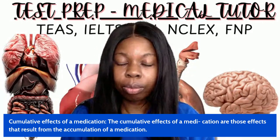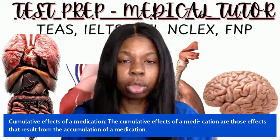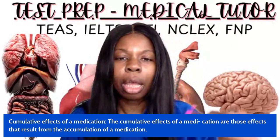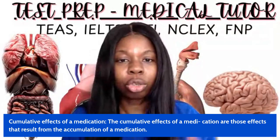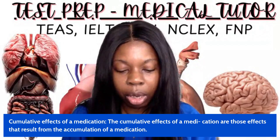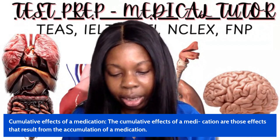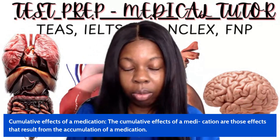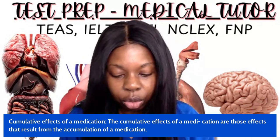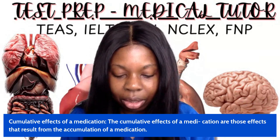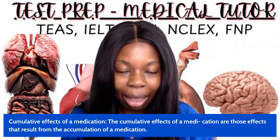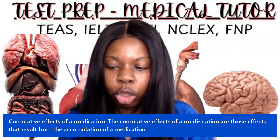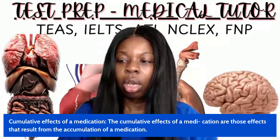I'm going to be reading from one of my books called the Pharmacology Cheat Sheet Guide, and helping you to better understand these pharmacology terms. So the first one: cumulative effects of a medication are those effects that result from the accumulation of a medication. Cumulative effects can occur as a result of several impaired pharmacokinetic processes, including impaired biotransformation and excretion of drugs, as often occurs among elderly clients because of normal changes of the aging process.